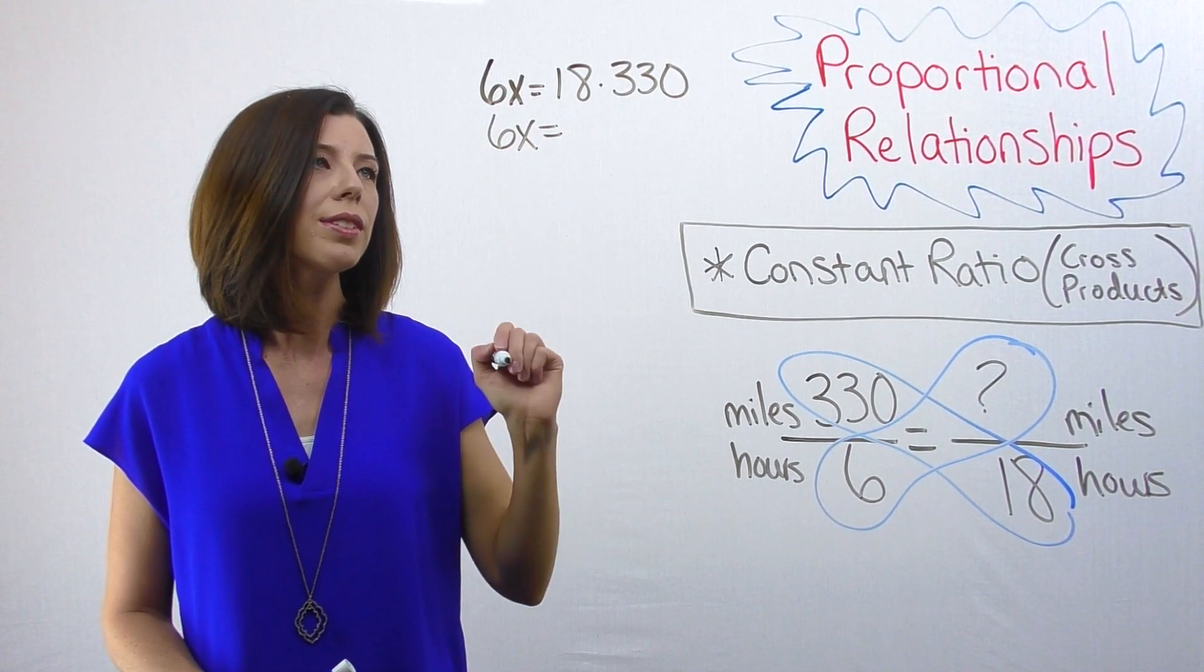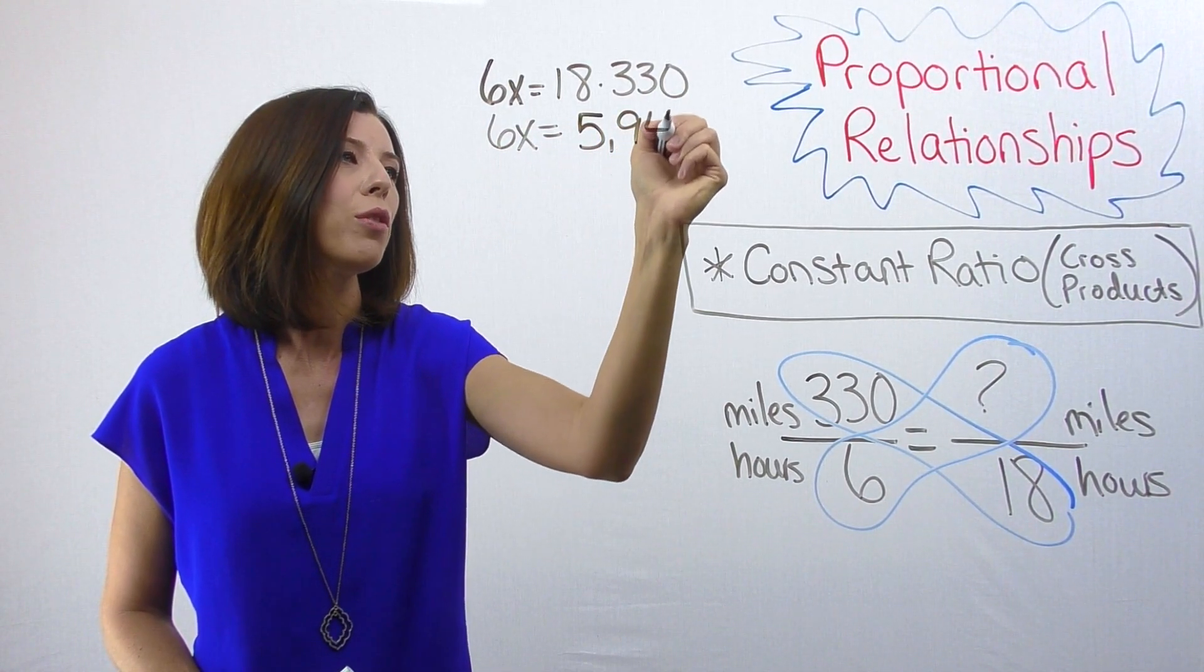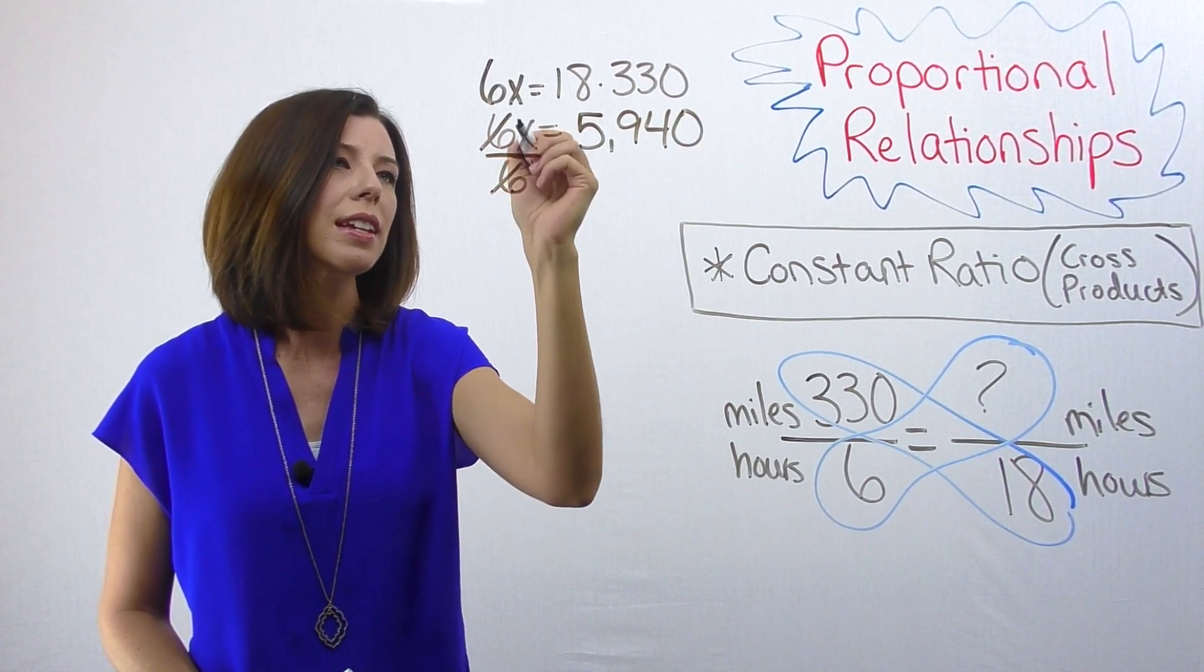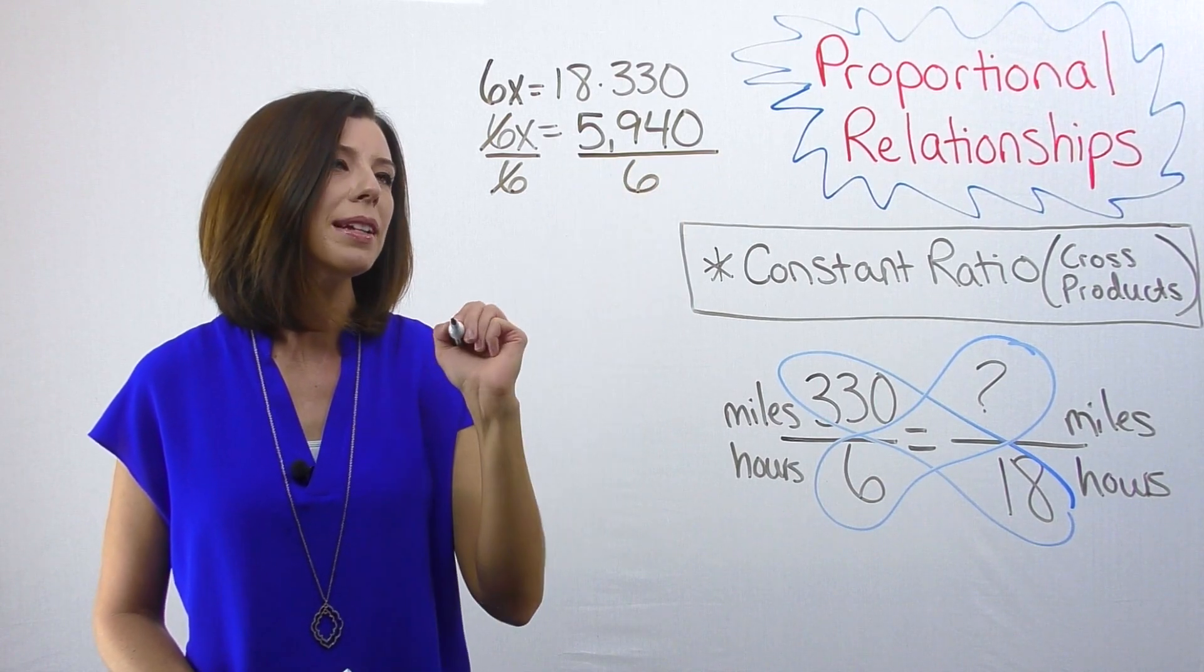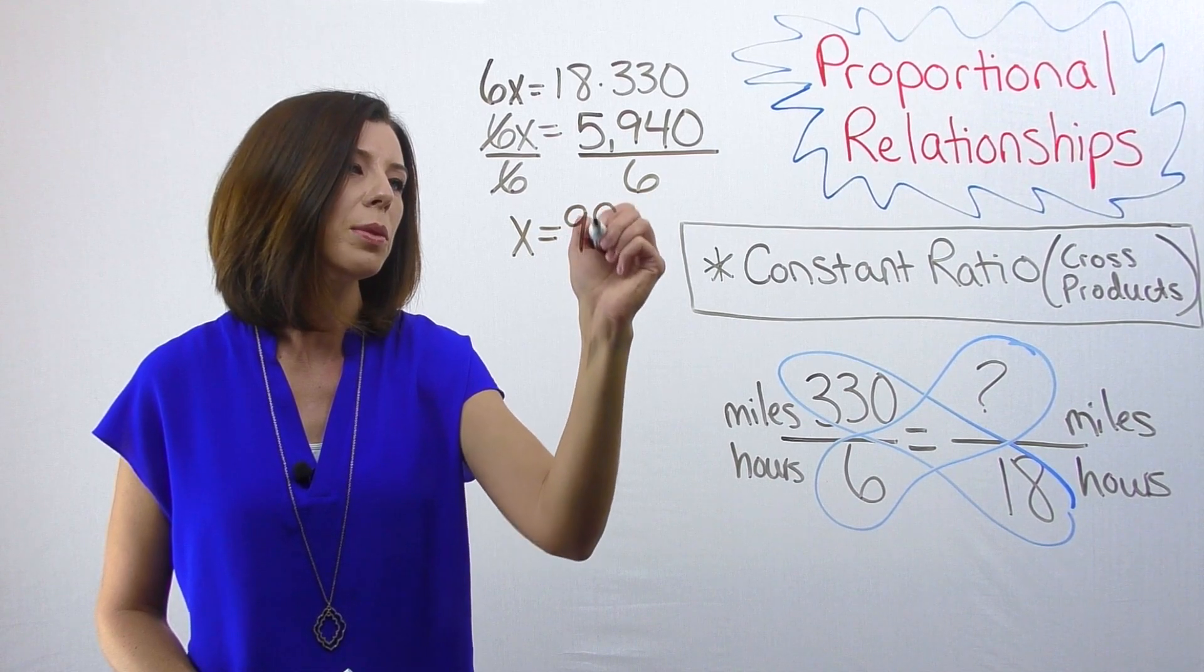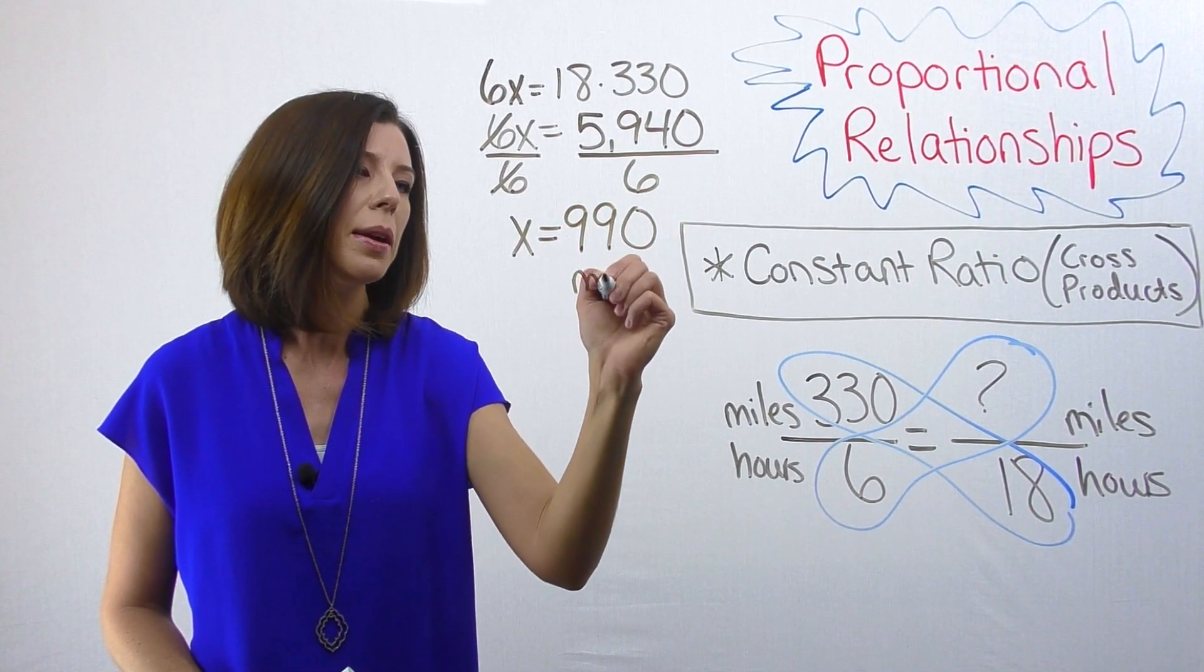6x equals 5940. Then I need to divide by six to get my variable by itself. Divide this side by six to get the variable by itself, and I get x equals 990 miles.